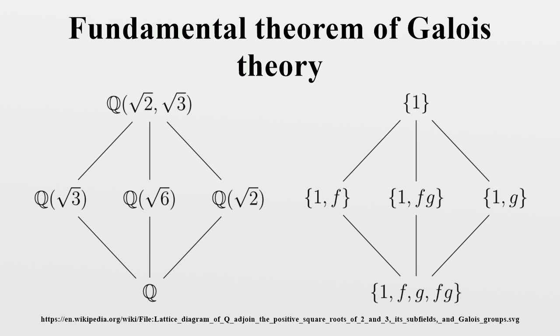It is generated by two automorphisms, say f and g, which are determined by their effect on θ and ω. As usual, the entire group G corresponds to the base field Q, and the trivial group {1} corresponds to the whole field K.